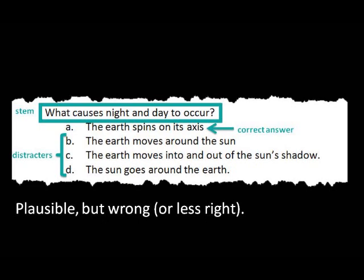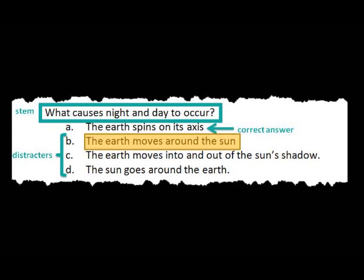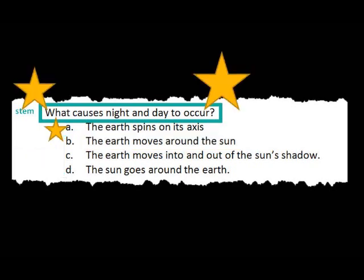Look at the example here. This question asks: what causes day and night to occur? The second option — the Earth moves around the sun — might look very plausible to some people. This distractor weeds out people who only understand that night and day have something to do with the Earth's movement. To those who truly understand that they're based on Earth's rotation, this distractor is clearly wrong. So all the information you need to answer a well-written question should be in the STEM. Don't be distracted by those distractors — focus on the question being asked.